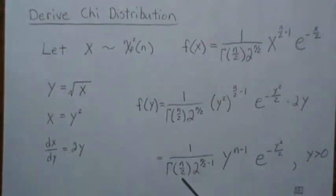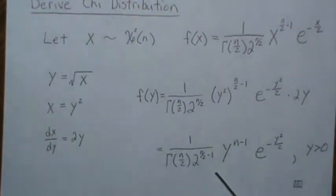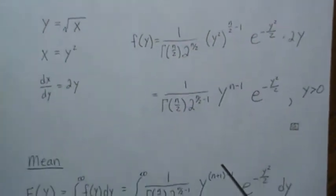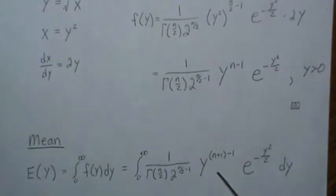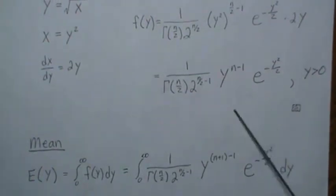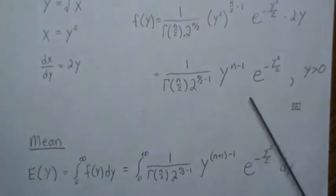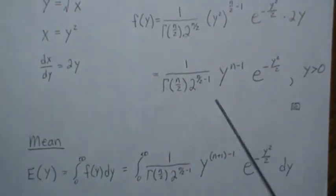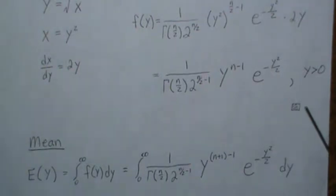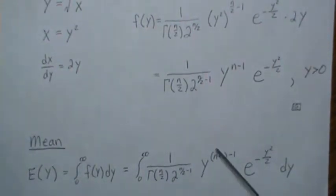So now let's derive the mean and variance of a chi distribution. The way we do it is, since we know this is a chi distribution that integrates to one, our goal is to try to make another chi distribution, and then whatever constants out front end up being the mean. I'll illustrate that.